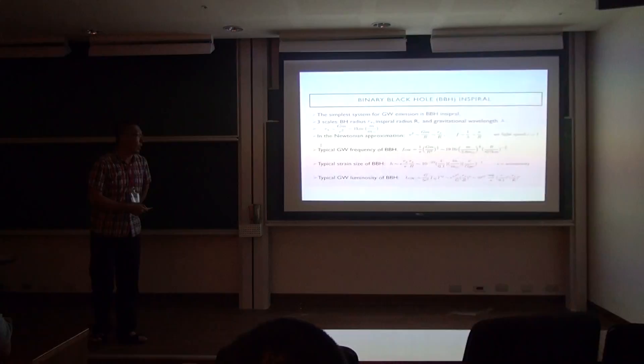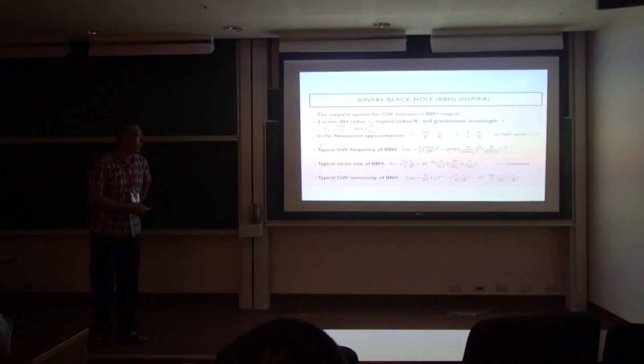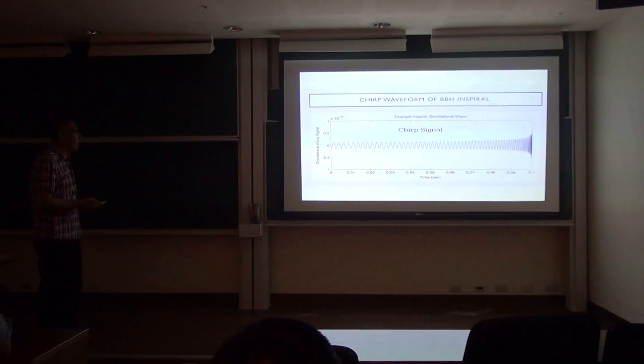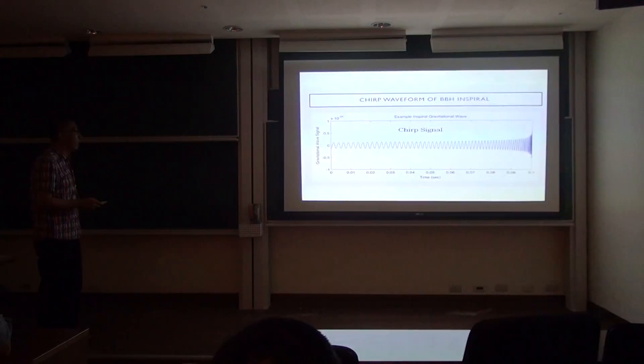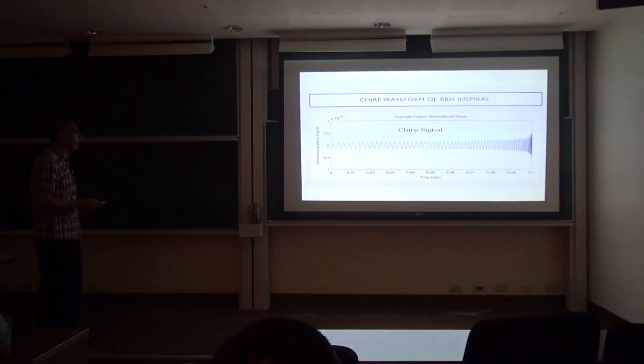During the inspiral phase, the gravitational wave signal is called a chirp — named after the sound of a bird chirping — because both the frequency and amplitude increase with time as the two black holes spiral closer together.